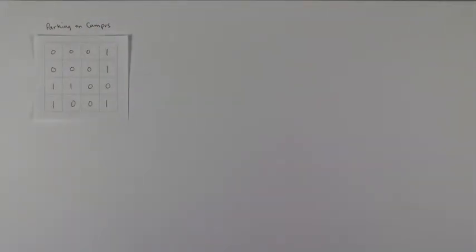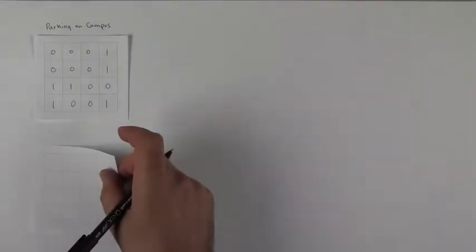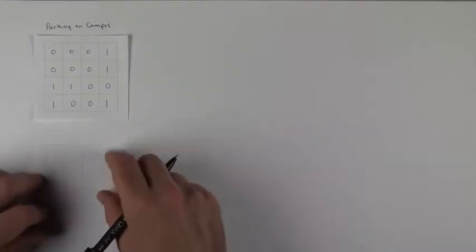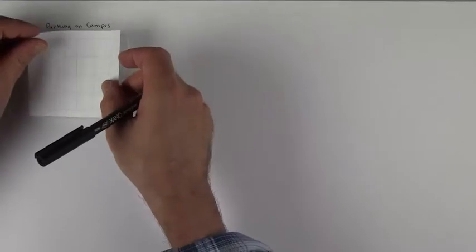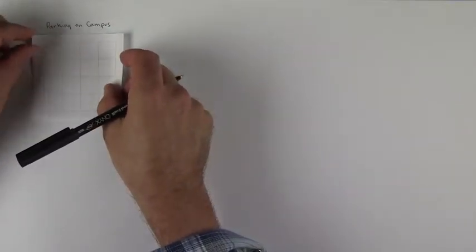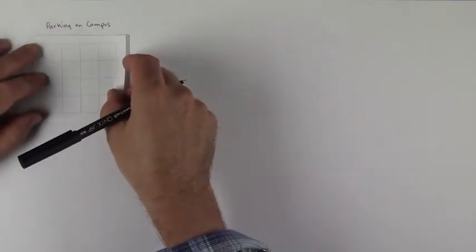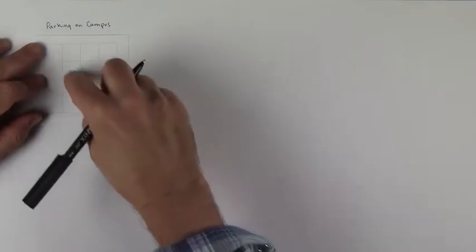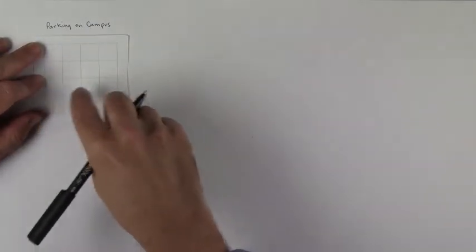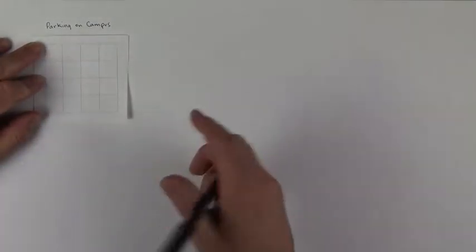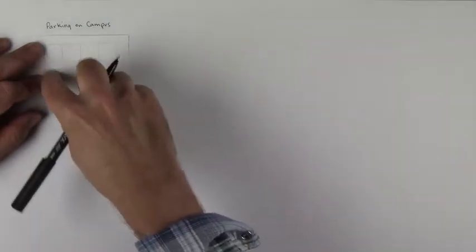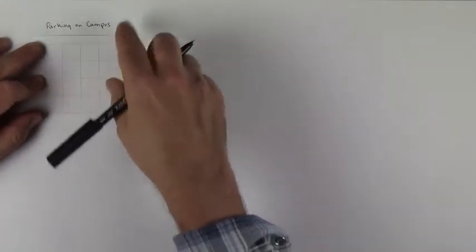And the other raster we had, it was the same size and the same extent. Well, it was the same extent and the cell size was the same. And so it has four columns and four rows.